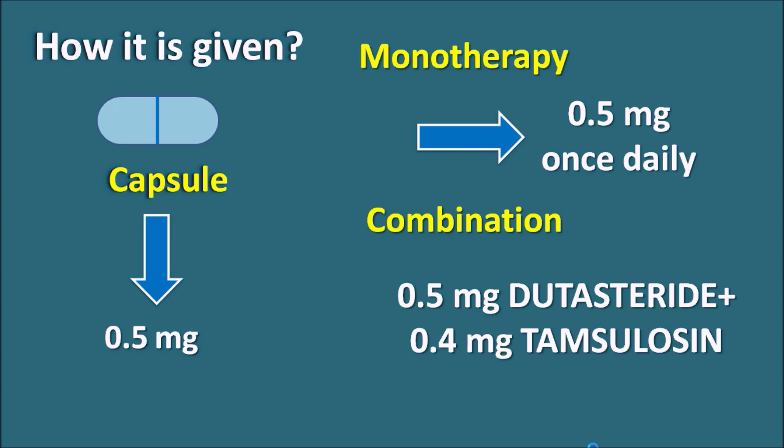Dutasteride can be used as monotherapy or combination therapy at a dose of 0.5 mg once daily. It is particularly used to treat benign prostatic hyperplasia by inhibiting the conversion of testosterone into dihydrotestosterone, the active form of androgens. By inhibiting this enzyme, dutasteride inhibits androgenic activities, reducing enlargement of the prostate tissue and relieving the symptoms of BPH.